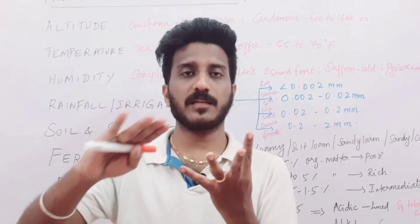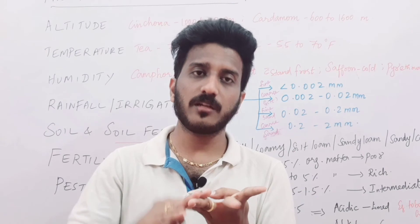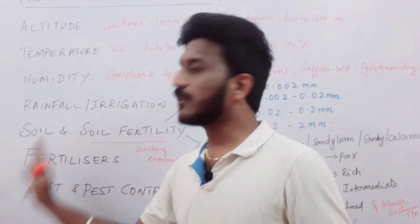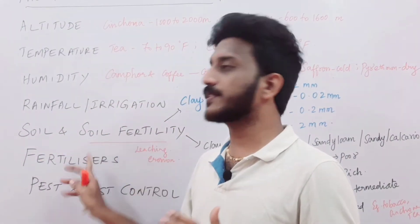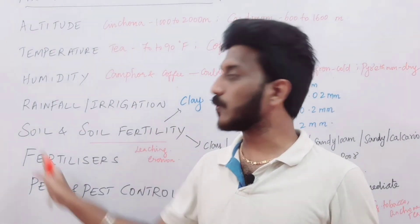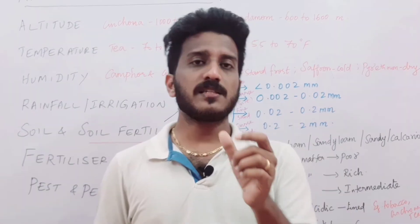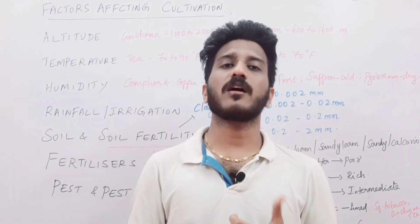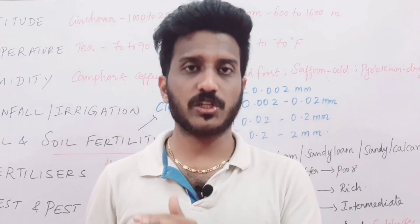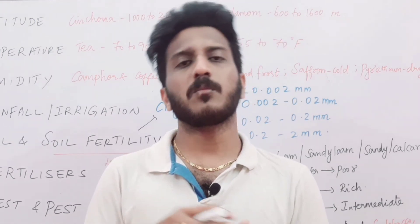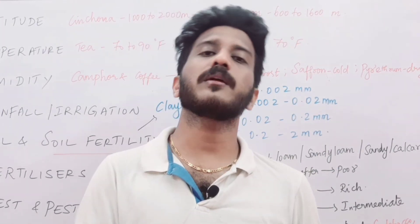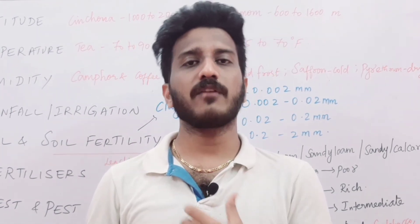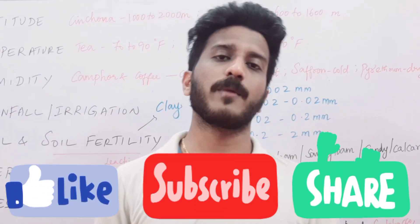These four parameters — altitude, temperature, humidity, and rainfall — play a major role. The other very important parameters are soil and soil fertility, fertilizers, and pest and pest control; these will be discussed in the next video. Since most viewers are from other regions and want this pharmacognosy content in English, most statements were made in English. Tamil medium students who cannot understand are kindly asked to leave a message, and doubts will be solved. Learning today for a better tomorrow.